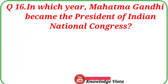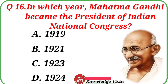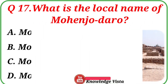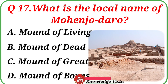Question number sixteen: In which year did Mahatma Gandhi become the president of the Indian National Congress? Your options are: A. 1919, B. 1921, C. 1923, D. 1924. Correct answer is option D, 1924.